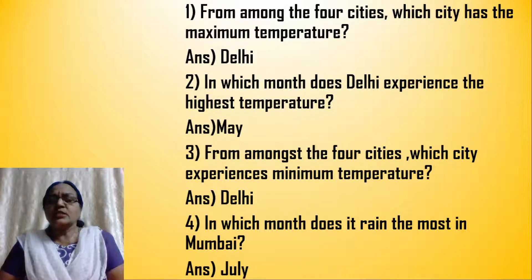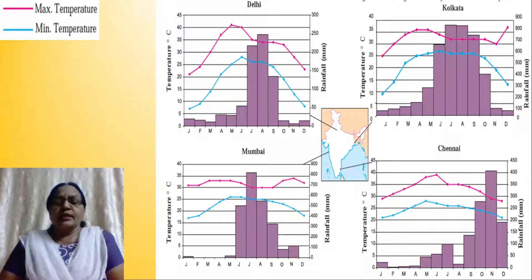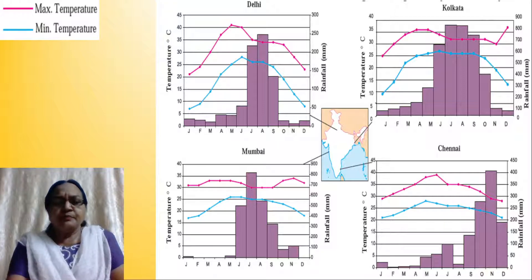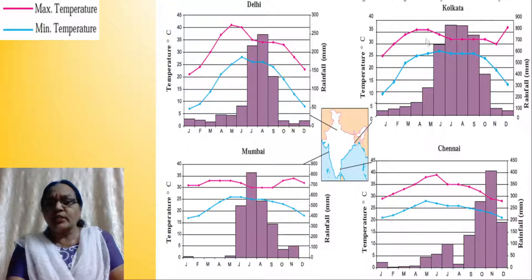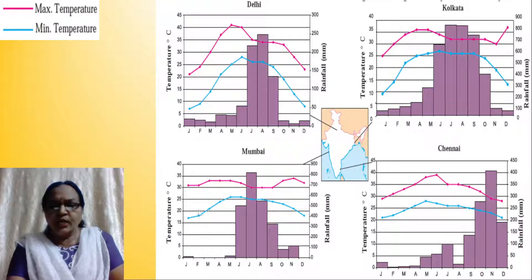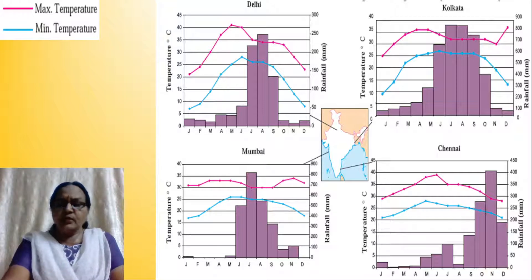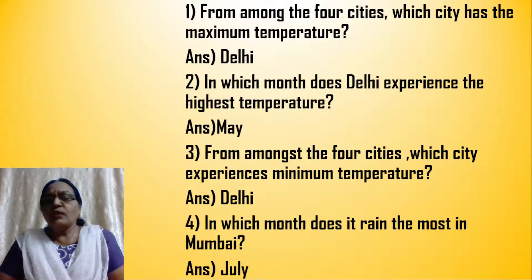From among the four cities, which city has the maximum temperature? Maximum means the highest temperature. In Delhi you find it is more than 40 degrees centigrade in summer. Kolkata will be more than 35, Chennai around 39, and Mumbai less than 35. So which city among the four will have the maximum temperature? It is of course Delhi.